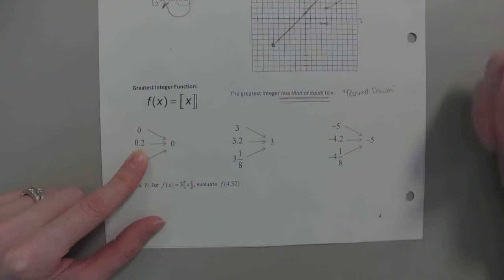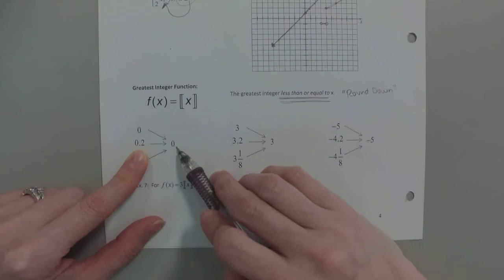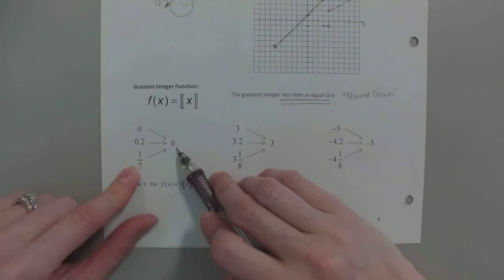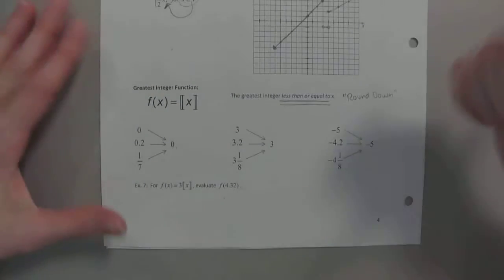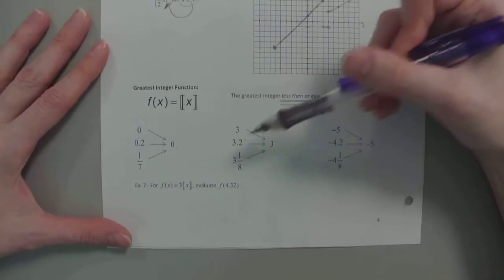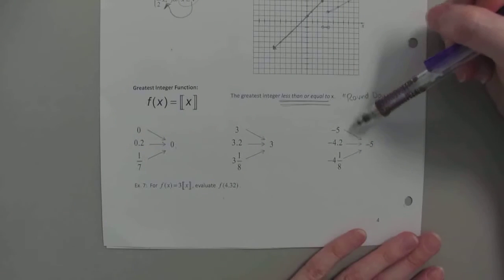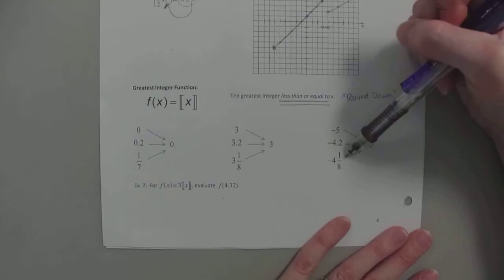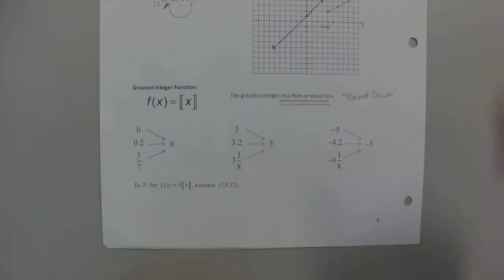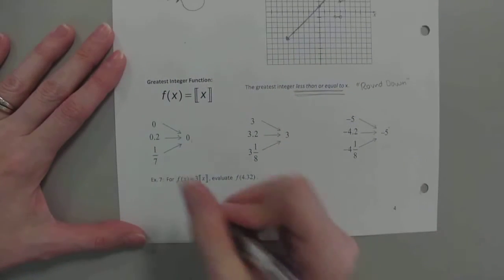0.2, what is the greatest number, whole number, equal to or less than 0.2? 0. You're rounding down, right? 1 7th, it's a fraction. If I put 1.9, what are you still putting? Or if I'm putting 0.9, what are you still putting? 0. So you just always round down to that next integer is what we're doing. So notice that here, 3 is 3, 3.2 runs down to 3, 3.1, 3 and 1 8th runs down to 3, and same thing here. Negatives get kind of tricky, right? Because the bigger negative is actually the smaller. Okay? So negative 5 runs down to negative 5. Negative 4.2 rounds down to negative 5, and negative 4 and 1 8th runs down to negative 5. All right?